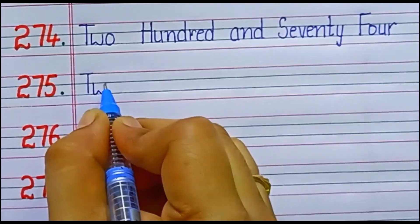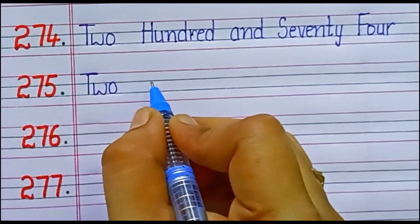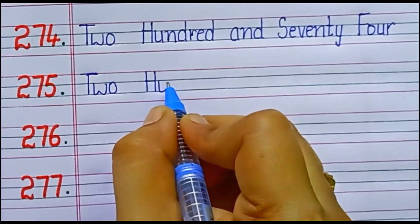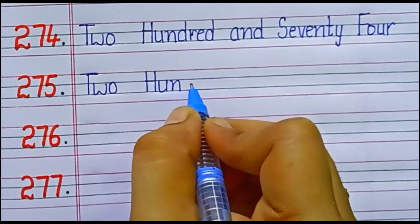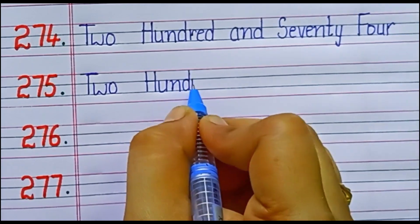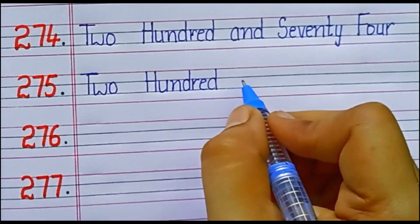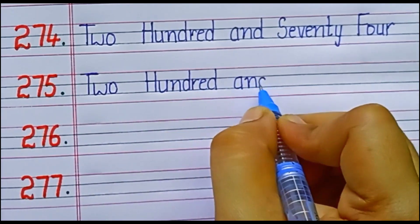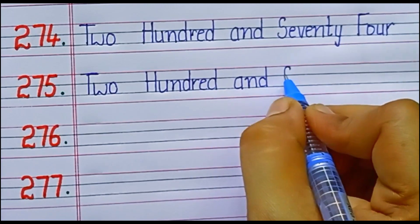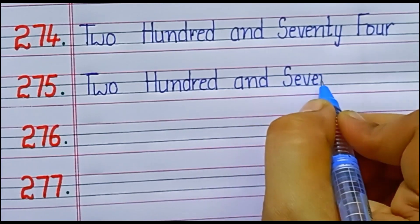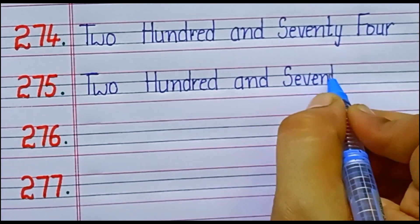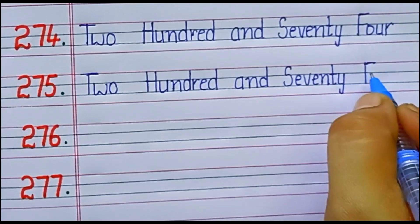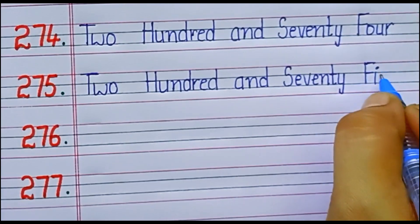275. S-E-V-E-N-T-Y, 70. F-I-V-E, 5. 75. Two hundred seventy-five.